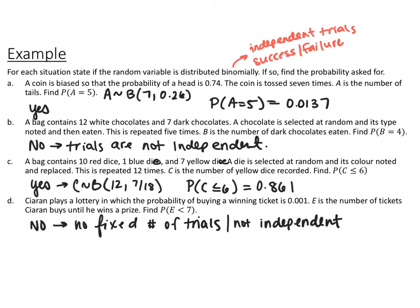For situation D: Ciaran is playing the lottery. The probability of buying a winning ticket is 0.001, and he buys until he wins a prize. This is not a binomial distribution because there is not a fixed number of trials — he keeps going until he wins. It's also not independent because whether he buys another ticket depends on prior outcomes.